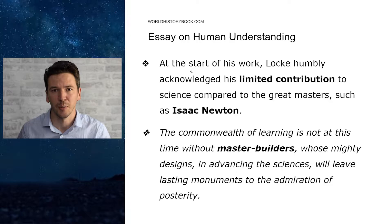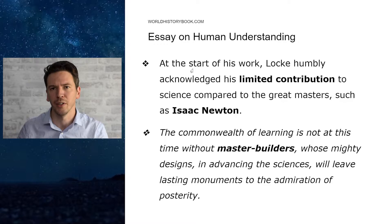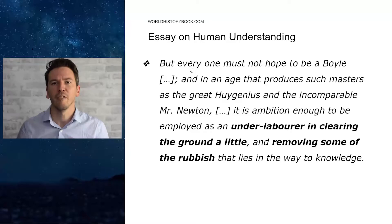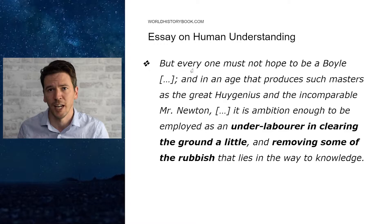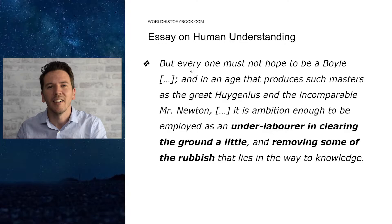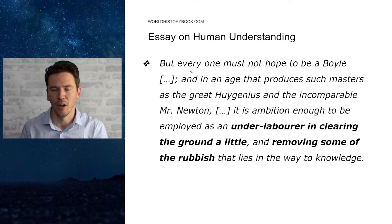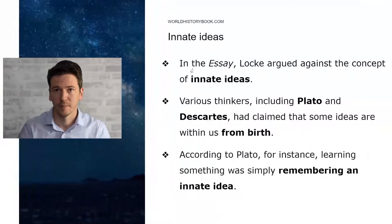At the start of the text, Locke humbly acknowledges his limited contribution to science compared to the great masters such as Isaac Newton. The commonwealth of learning is not at this time without master builders, whose mighty designs in advancing the sciences will leave lasting monuments to the admiration of posterity. But not everyone must hope to be a Boyle — one of the great scientists of his day — and in an age that produces such masters as the great Huygenius, another scientist from the Netherlands, and the incomparable Mr. Newton. It is ambitious enough to be employed as an underlaborer, as Locke calls himself, in clearing the ground a little and removing some of the rubbish that lies in the way to knowledge.